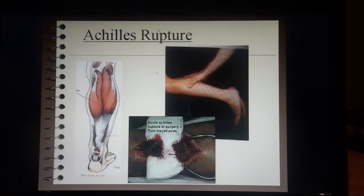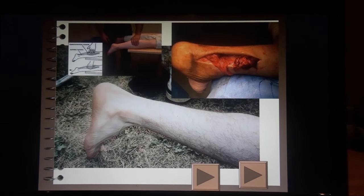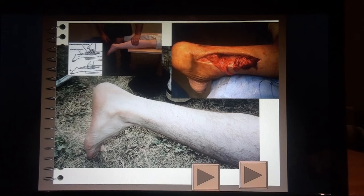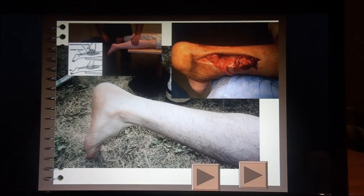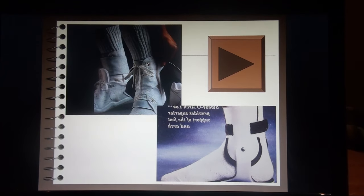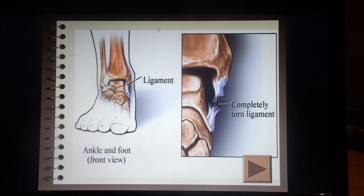If you have an Achilles rupture, there is a complete tearing of the Achilles tendon. With a rupture, if you squeeze the gastrocnemius, the foot will not go into plantar flexion as it normally would — the foot should go into plantar flexion when the calf is squeezed, but won't if the tendon is severed. Some braces may be used for lower foot injuries.